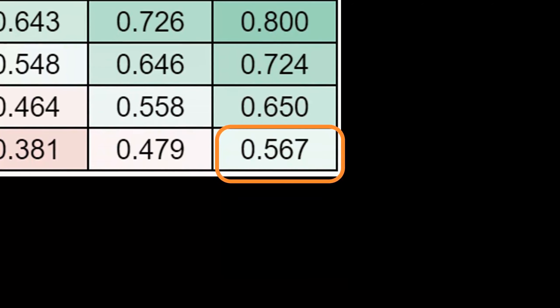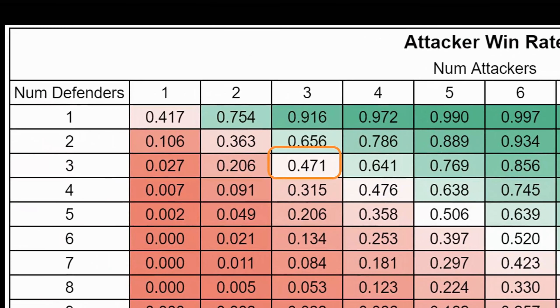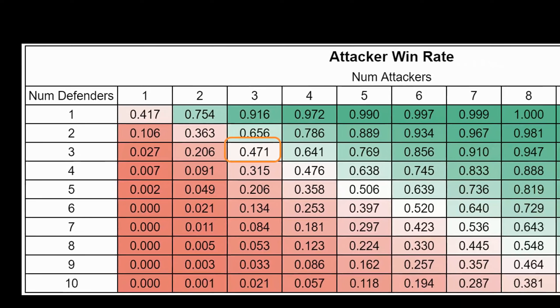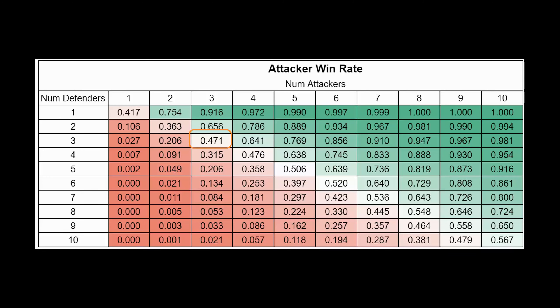10 attackers vs 10 defenders is a more balanced 57% win rate for the attackers. Here was an unexpected result though: 3 attackers vs 3 defenders. I would have expected the attackers to have the advantage since they are rolling 3 dice vs 2 dice. Instead, they only win 47% of the time. When I investigated why, it's because the attackers start with a small 3v2 advantage, but if the attackers ever lose a die, then they are at a pretty severe 2v2, 1v2, or 1v1 disadvantage.